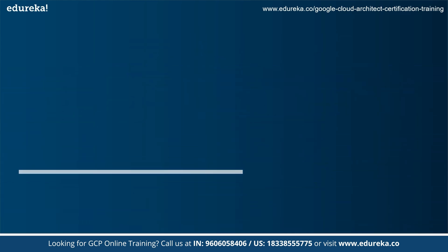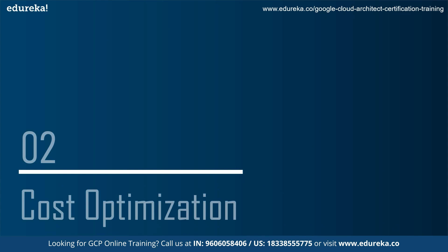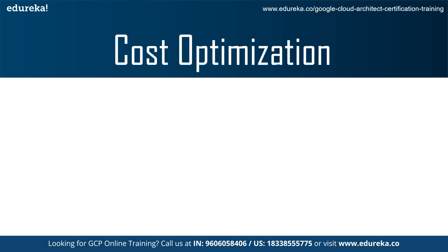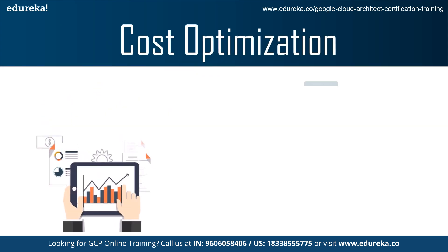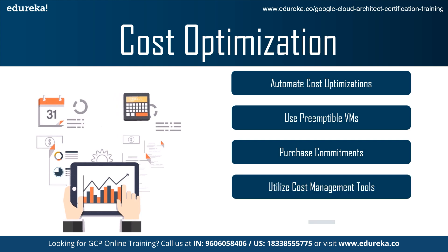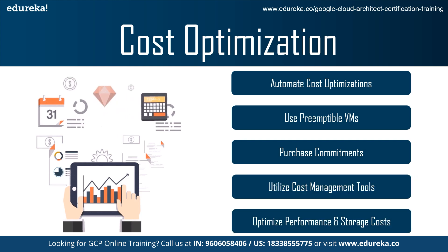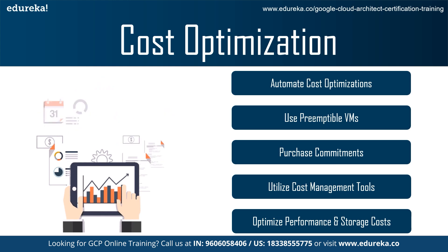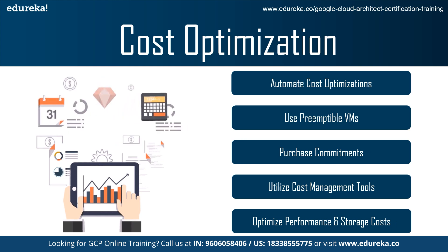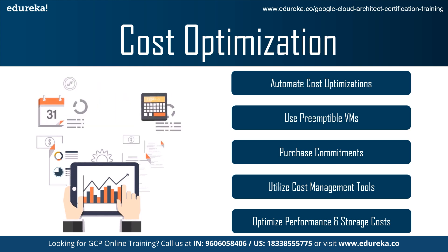Moving on to the second category: cost optimization. One of the best practices is to automate tasks and reduce manual intervention. Automation is simplified using a label, which is a key-value pair applied to various Google Cloud services. You can attach a label to each resource such as compute instances, then filter the resources based on their labels.